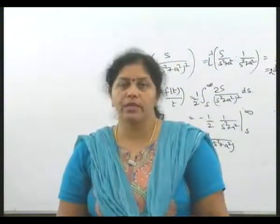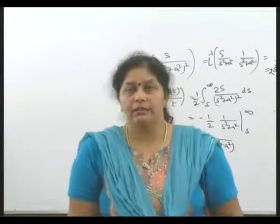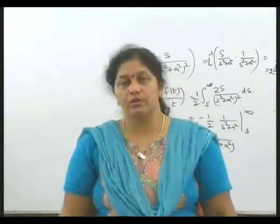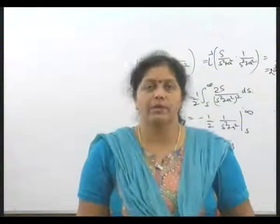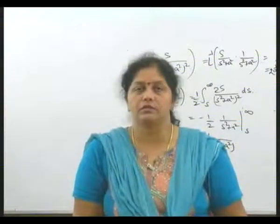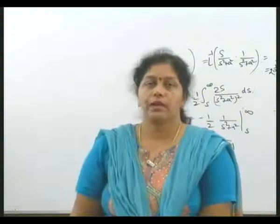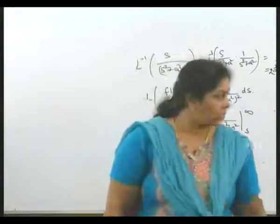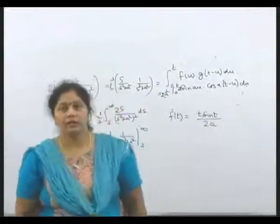Applying the limits: at u equals t, we get cos(2at - at) equals cos(at). At u equals 0, we get minus cos(minus at), but cosine is an even function so cos(minus at) equals cos(at). Therefore we get cos(at) minus cos(at) which is zero, and the final result is t sin(at) divided by 2a — the same answer as before.